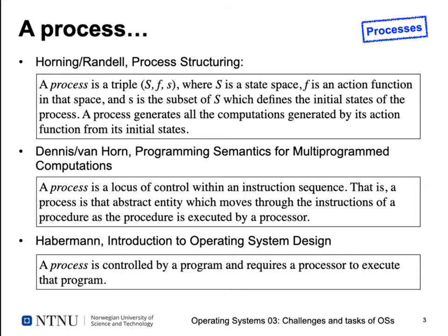Dennis and Van Horn had a paper called 'Programming Semantics for Multiprogrammed Computations' — whenever you see multiprogramming, it's a pretty old definition because nobody uses this term anymore. They define a process as 'a locus of control within an instruction sequence — that is, a process is that abstract entity which moves through the instructions of a procedure as a procedure is executed by a processor.'